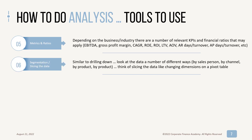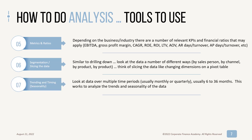Number six is segmentation, or slicing the data. Similar to drilling down, this is where you look at the data a number of different ways — by salesperson, by channel, by product. Think of it like a pivot table where you're changing different dimensions. Number seven is trending and timing, which is one of my favorites. This is where you look at data over multiple periods — usually monthly or quarterly, somewhere between 6 and 36 months. This helps you see seasonality and sometimes patterns you don't expect, good or bad.